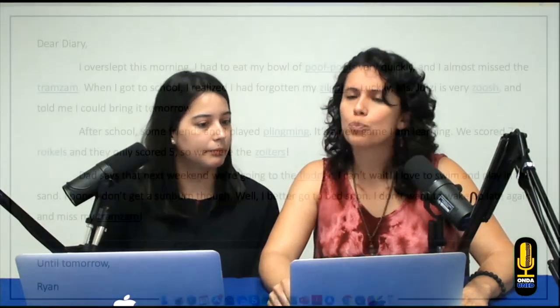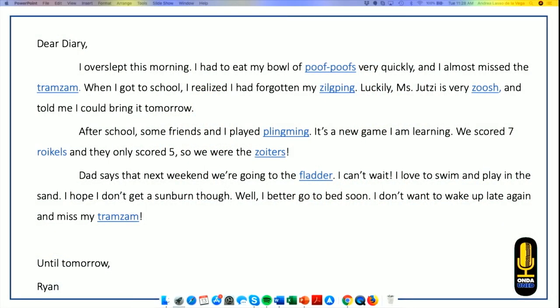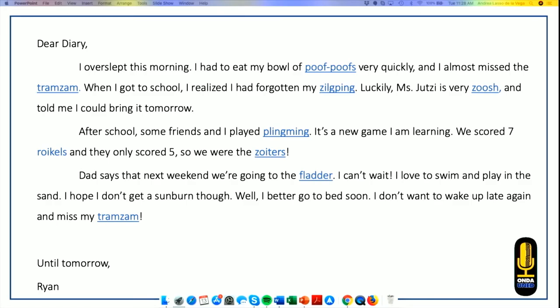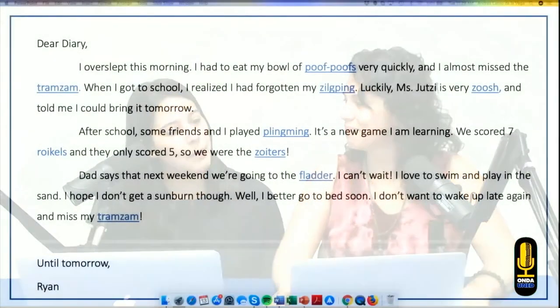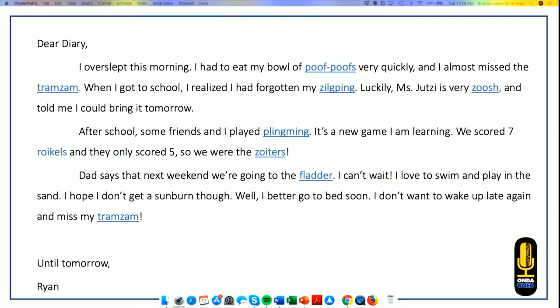We are going to try to discover what some of the blue words mean. Andrea, after reading, what do you think Puff Pruves are? I would say they could be some type of cereal. Because it says that you can eat it, that you can place them in a bowl, and you can eat them very quickly. What about Transam? I would say some type of kind of means of transportation. Maybe bus or subway. And Zilting? That one is interesting. I would say it could be some kind of homework or project that you forget and you need to bring it to school. Have that happened to you before? Yes, many times. Background knowledge, super important. And what about Sush? I would say that is a positive quality. Maybe like a nice person or understanding when you have some kind of problem or difficulty.